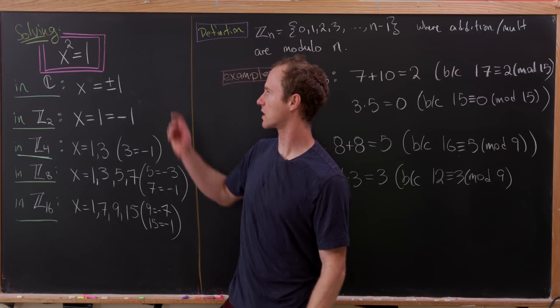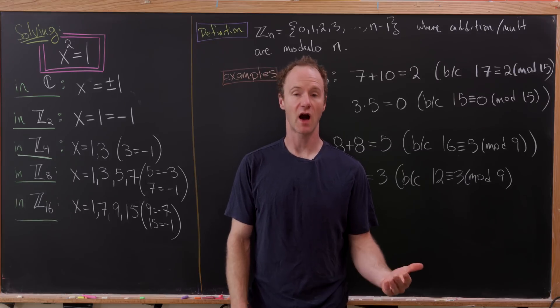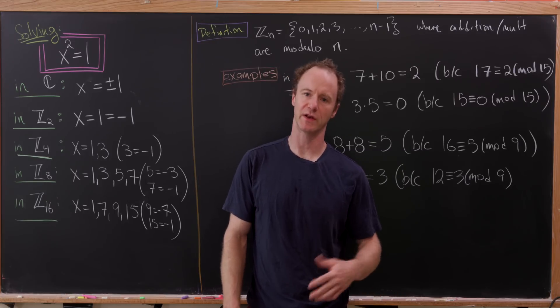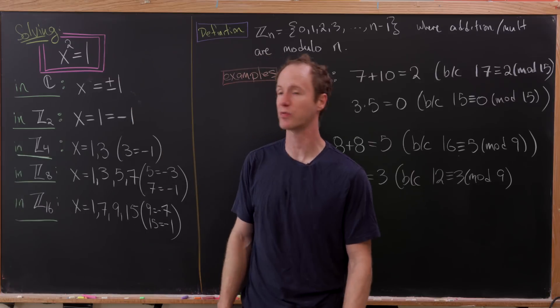In particular, we're going to look at the equation x² = 1, which of course, in the complex numbers, or the real numbers, or the rational numbers, or the integers, the only two solutions are ±1.